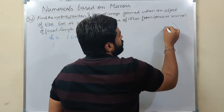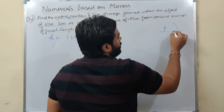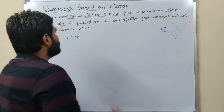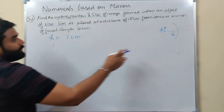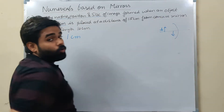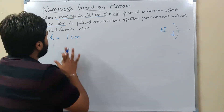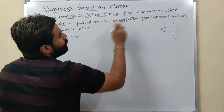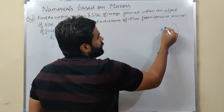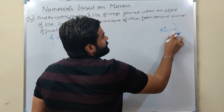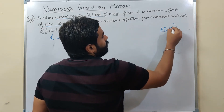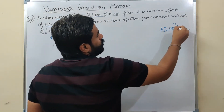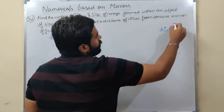Let me tell you again for those who haven't seen my last video - this is the object's height, this is its size given as one centimeter. It is always above the principal axis, so by sign convention its value will be positive. The object is placed at a distance of 15 cm from a concave mirror.